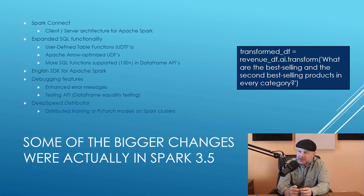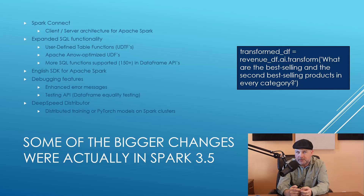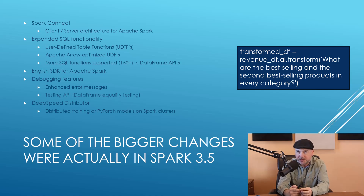They also introduced a DeepSpeed distributor. DeepSpeed is a training system for PyTorch modules. So if you're doing machine learning and want to use Apache Spark's architecture for distributing that training, the DeepSpeed distributor introduced in 3.5 can help you integrate Spark into your machine learning pipeline.